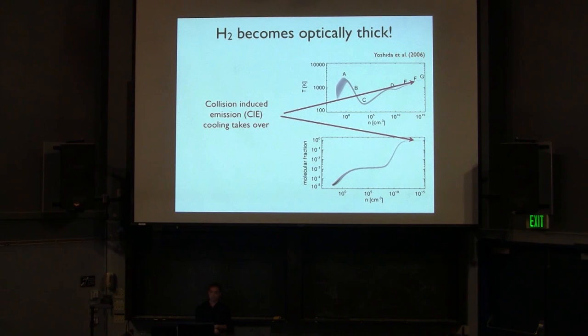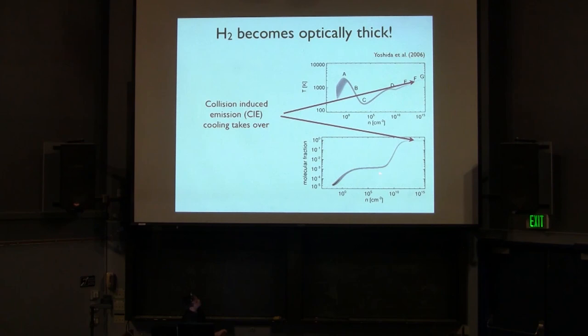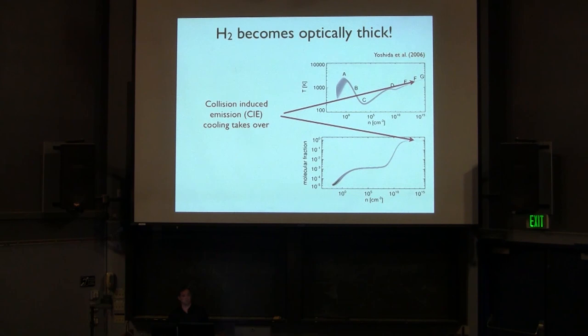These are the various stages making up the Population 3 star formation picture. Once the gas runs out of H2, you hit the hydrostatic core and you have a star. In present-day star formation there is an isothermal regime, an optically thick dust-cooling regime, another near-isothermal phase as H2 breaks, and then optically thick again. Population 3 star formation doesn't have those different intermediate stages — it goes straight to the star, with no intermediate dust-cooling stage.